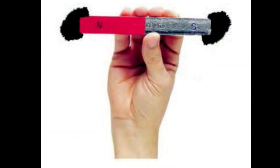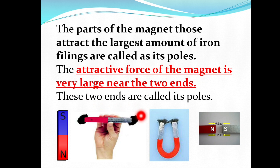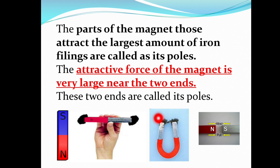You can observe that this is how iron filings are attracted to a magnet. The parts of the magnet that attract the largest amount of iron filings are called its poles. Both ends of the bar magnet attract large amounts of iron filings. The attractive force of the magnet is very large near the two ends. These two ends are called its poles.